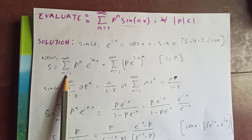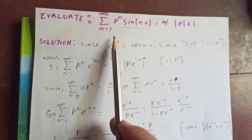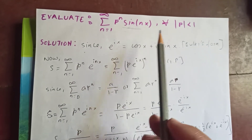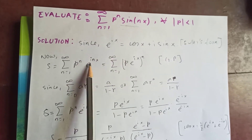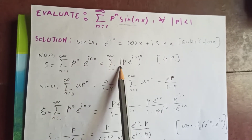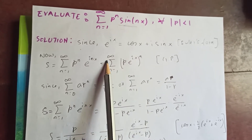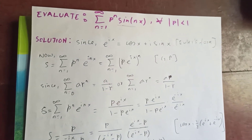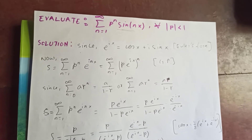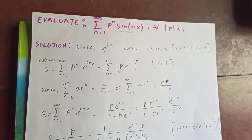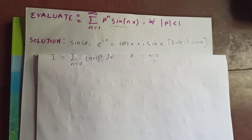Let H equal the sum from n equal to 1 to infinity of p^n · e^(inx), where we have replaced sine with the exponential e^(ix). So we can rewrite this as the sum from n equal to 1 to infinity of (p · e^(ix))^n. If you look at this sum carefully, the term inside is z = p · e^(ix), so this is a geometric series.